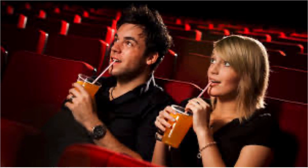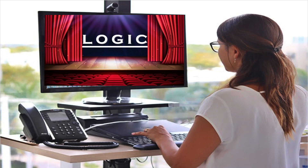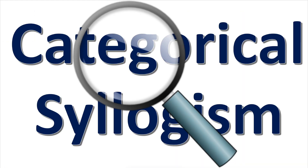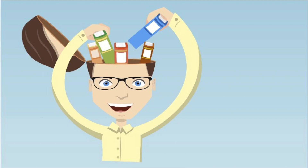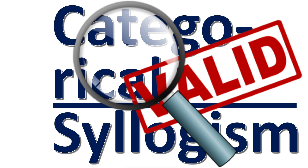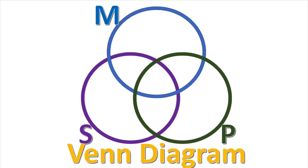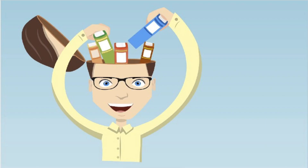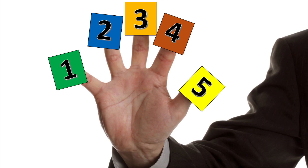Ladies and gentlemen, welcome back to Logic. In this video, I will introduce another way to check categorical syllogisms for validity. Now you already know how to check them for validity by the form of the syllogism and by using the Venn diagram. Now you will learn how to check them for validity with the five rules method.